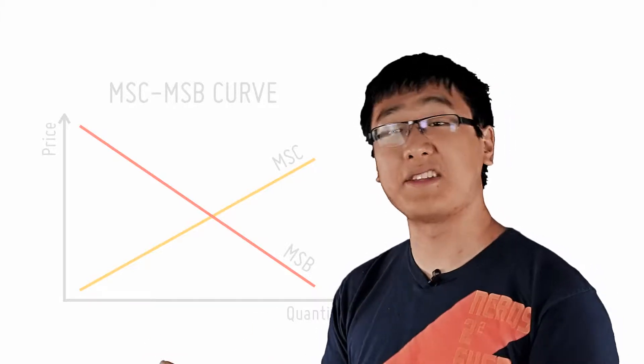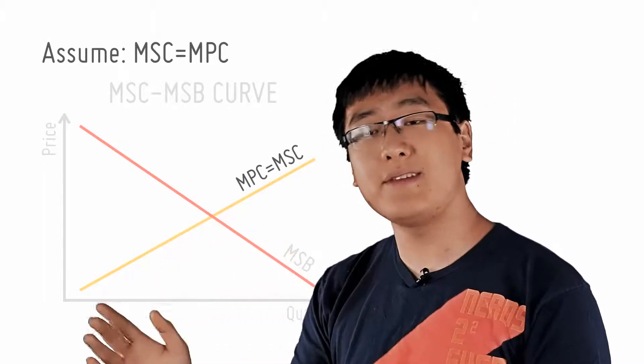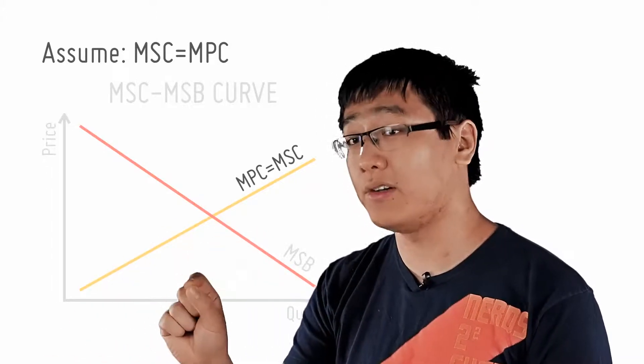Again, let's draw the graph for positive externality. Let's assume that MPC equals to MSC and there is no marginal external cost.